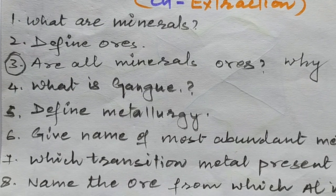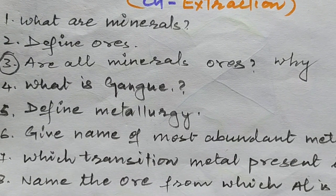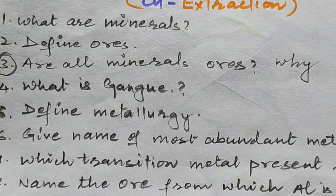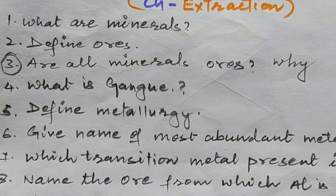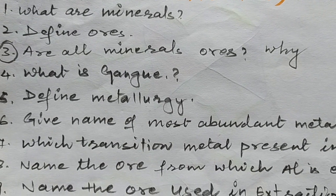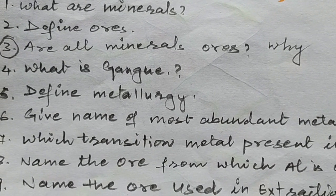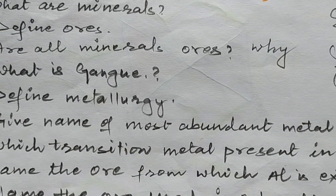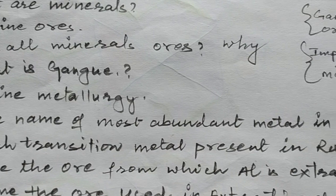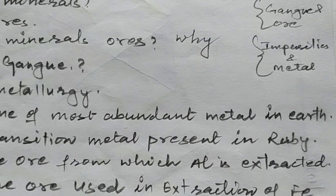The next question asks: define metallurgy and what are the components of metallurgy. The following question asks: give the example of the most abundant metal in the earth's crust. Which metal is found in the most abundant form?